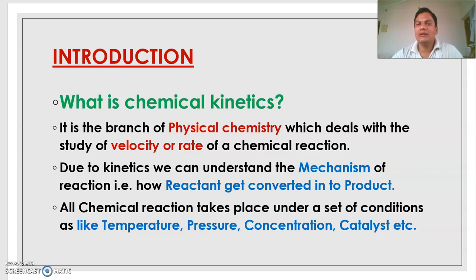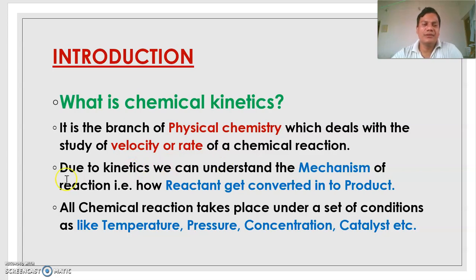In introduction, chemical kinetics is the branch of physical chemistry which deals with the study of velocity or rate of chemical reaction. Due to kinetics, we can understand the mechanism of reaction — that is, how reactants are converted into products, and the study of that conversion process.